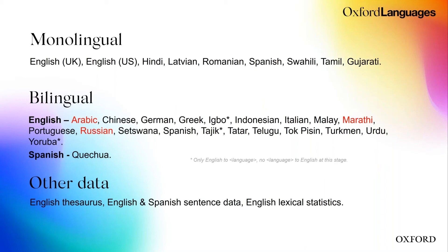The Oxford API currently has several data sets. Three of them have just been implemented with the latest release, version 2.3. Monolingual data sets include two variants of English — British English and US English (the New Oxford American Dictionary) — but we also have Hindi, Latvian, Romanian, Spanish, Swahili, Tamil, and Gujarati.